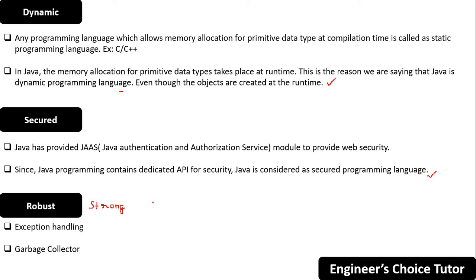Garbage collection is used for memory management. Because of exception handling and garbage collection, Java is considered robust. We will learn these concepts in detail later — for now, just know that these two concepts make Java robust.